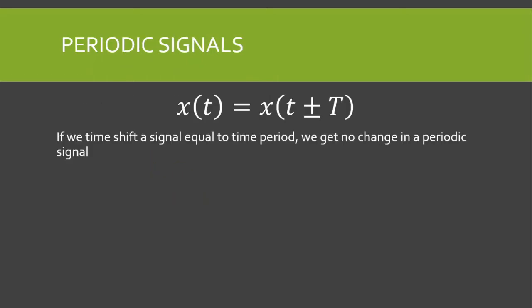What is the general representation of a periodic signal? The general representation means that if we time-shift a signal by an amount equal to the time period, we get no change in the periodic signal. The reason is that a periodic signal repeats after every time period, so if we left-shift or right-shift by the time period we will get no change.